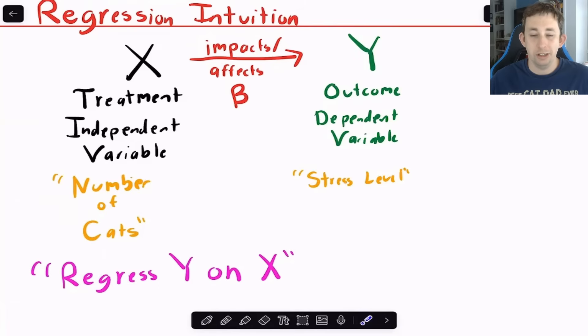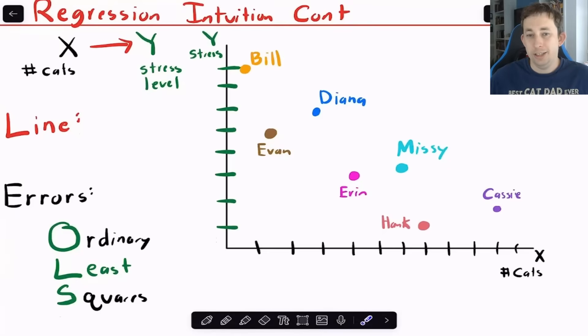So maybe in a really simple example, our treatment is just the number of cats that you own. And our outcome or our Y is just going to be your stress level from like zero to 10 or something. And so what we're going to say is the impact of X on Y that we measure, we're going to call that beta, that's going to be our regression coefficient when we regress Y on X. So if I just continue that example, we've got some observational data here. We've got seven people, we know how many cats they own, we know the reported stress level from zero to 10. We're trying to think about what is the relationship between the number of cats that you own and your stress level. What is that coefficient of regressing Y on X?